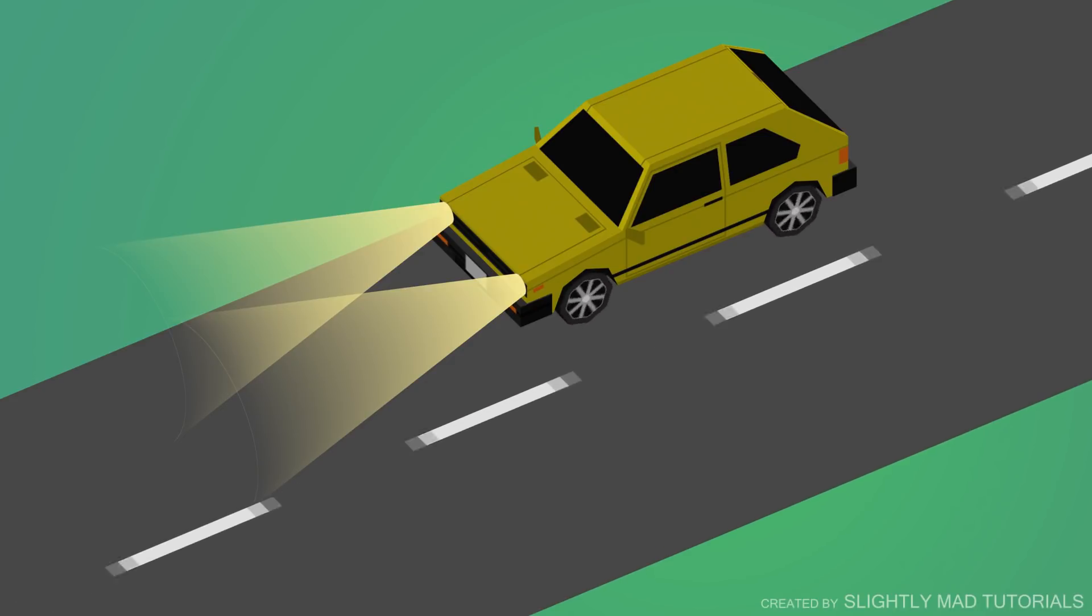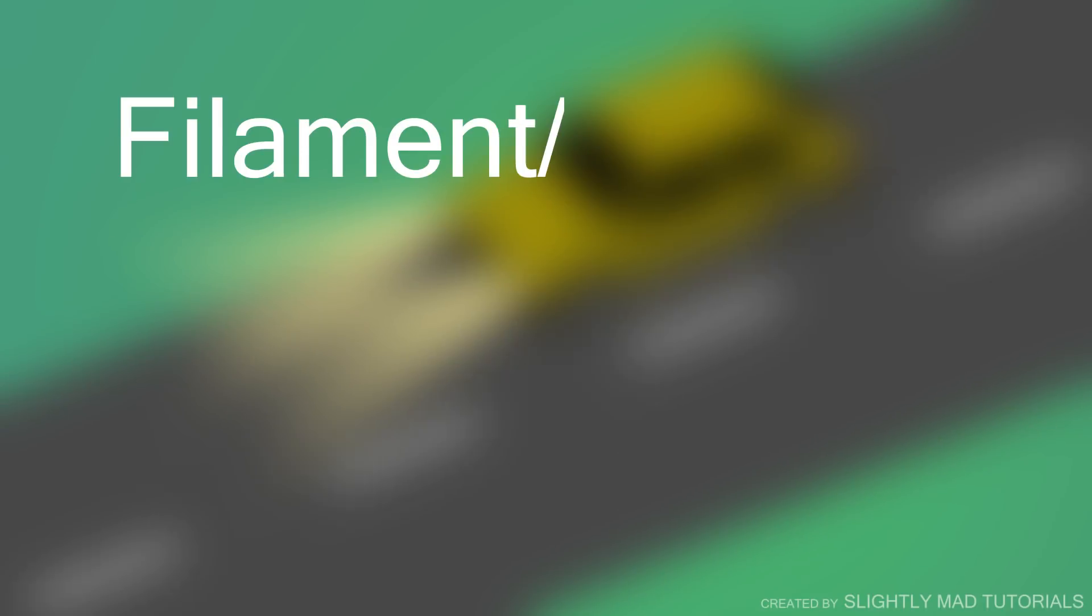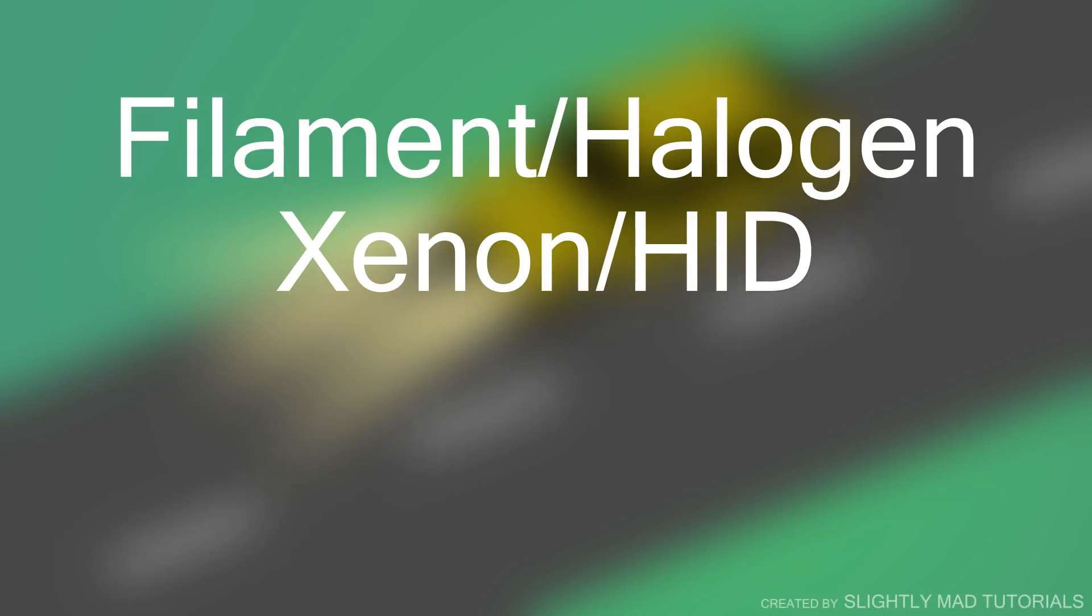Until relatively recently, all headlights used filament slash halogen bulbs to light up our paths. Now, however, few more types of headlights have been introduced. These include the xenon, or high-intensity discharge lamps, light emitting diode or LED, and the latest innovation, laser headlights, which will be the focus of this video.